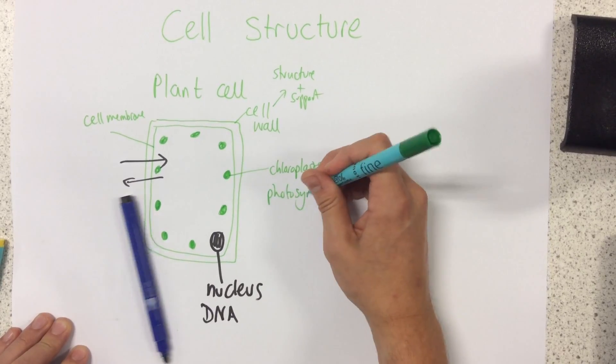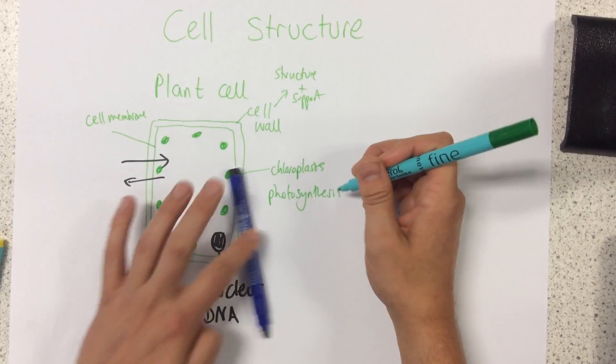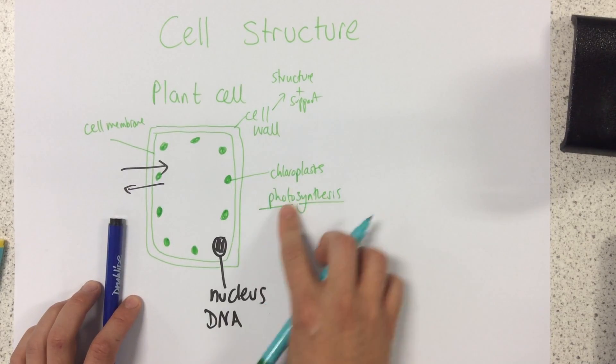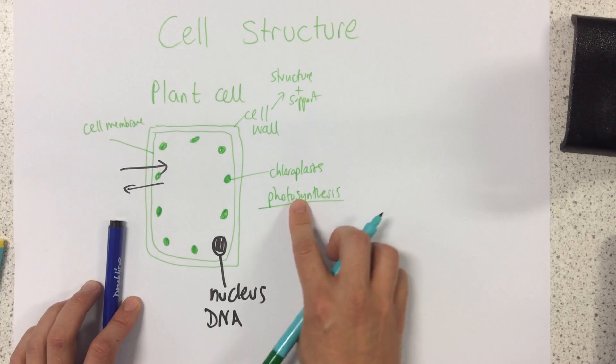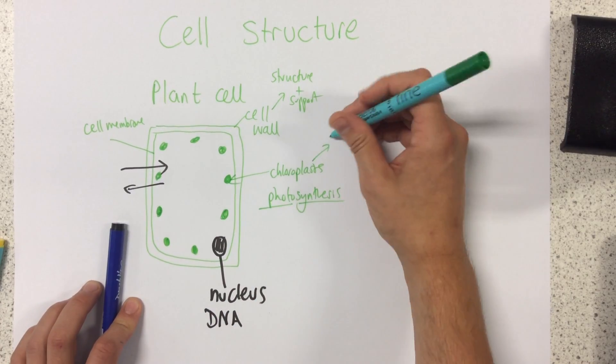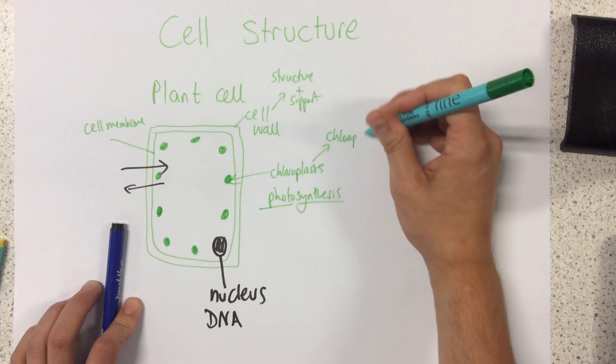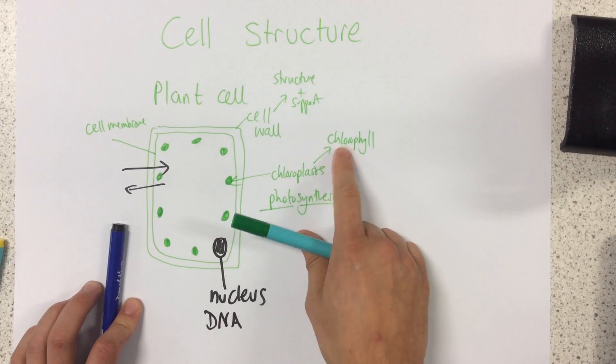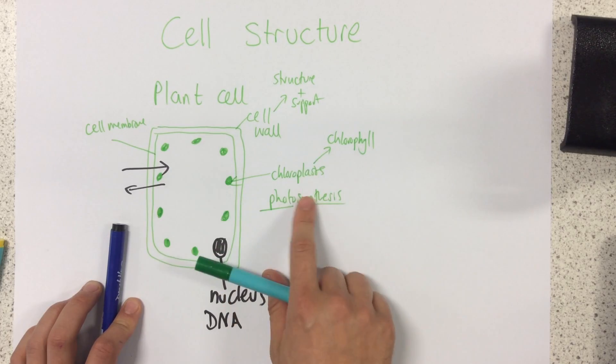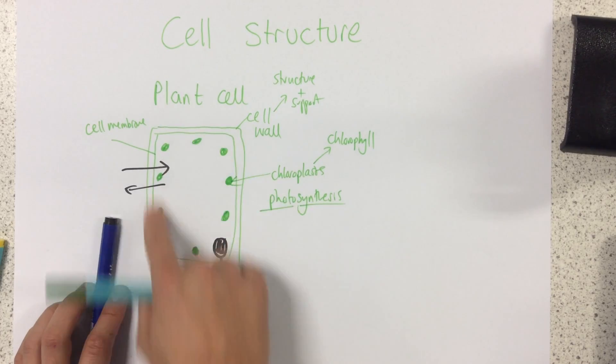Now what photosynthesis is, is using light to make glucose. Whenever you see the word photo we know it's something to do with light. Synthesis means making. So in the chloroplasts we have this particular pigment called chlorophyll and this is where those reactions happen to allow the plant cell to make its own glucose.